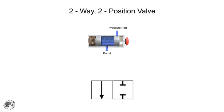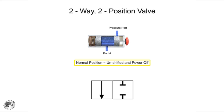Lines are drawn to indicate the normal position of the valve. The normal position is defined as the position of the valve when its spool is unshifted and the power is off. This means that any mechanical actuators, such as springs, are in their non-actuated positions, and electrical actuators, such as solenoids, are powered off. The normal position can sometimes be referred to as the unshifted, de-energized, or unactuated position. In this case, position one is the normal position, so the lines are drawn in the first box.